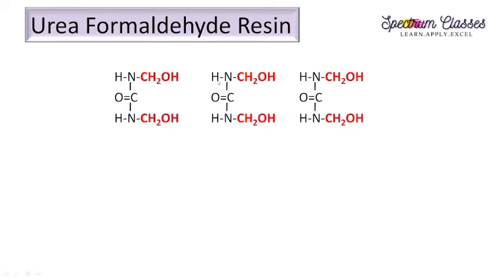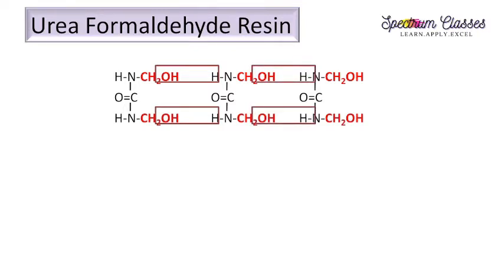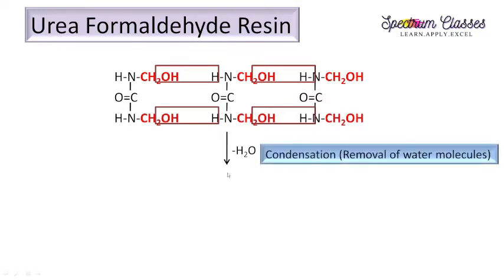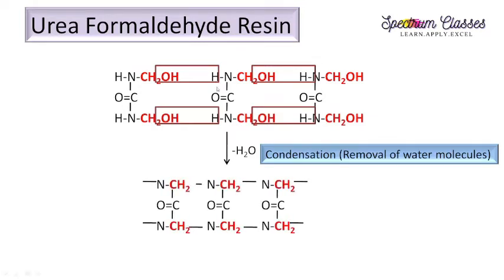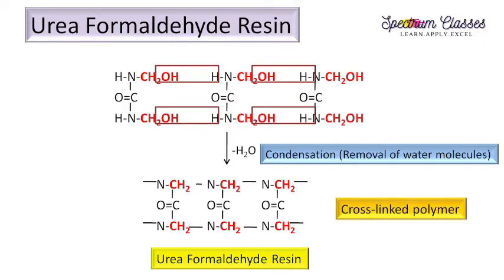Here this OH is in the vicinity of this edge, so this reacts like this. Similarly, here is the reaction site, and here is again the reaction site and reaction site on the terminals. If we increase the number of molecules we have more reaction sites. From this, removal of water molecules takes place, and this removal of water molecules is termed as condensation. After removing this water molecule from these sites, this H and this OH are removed, so we have a new bond between N and C. This is urea formaldehyde resin and this is a cross-linked polymer.